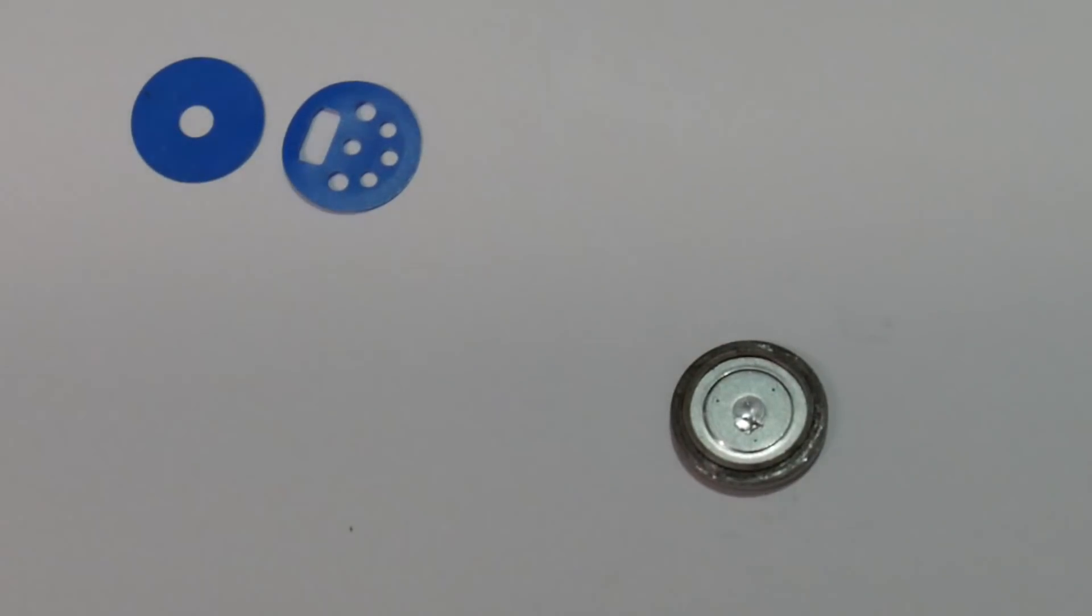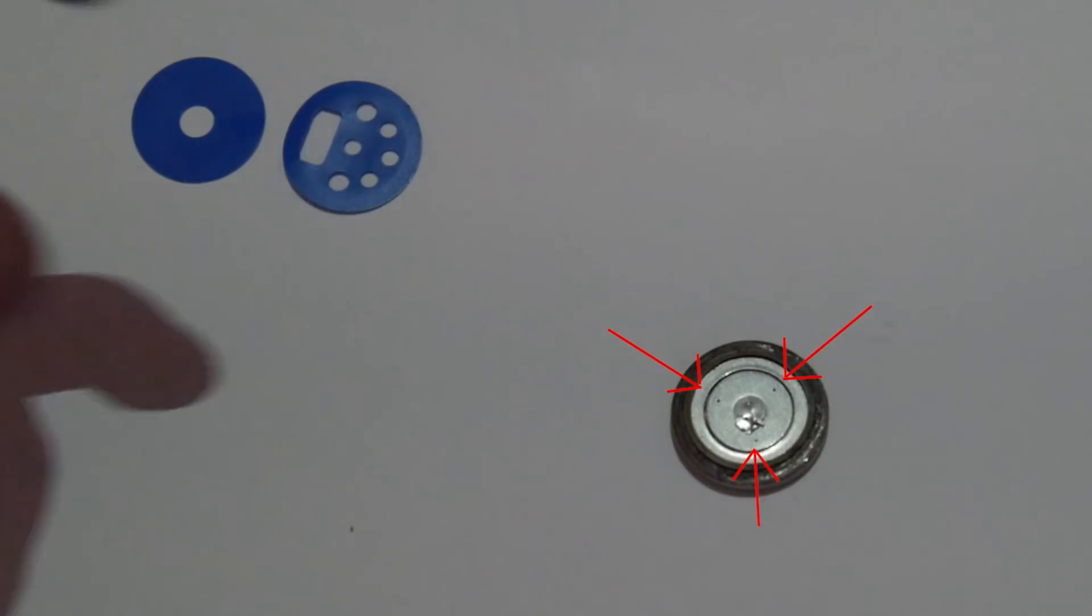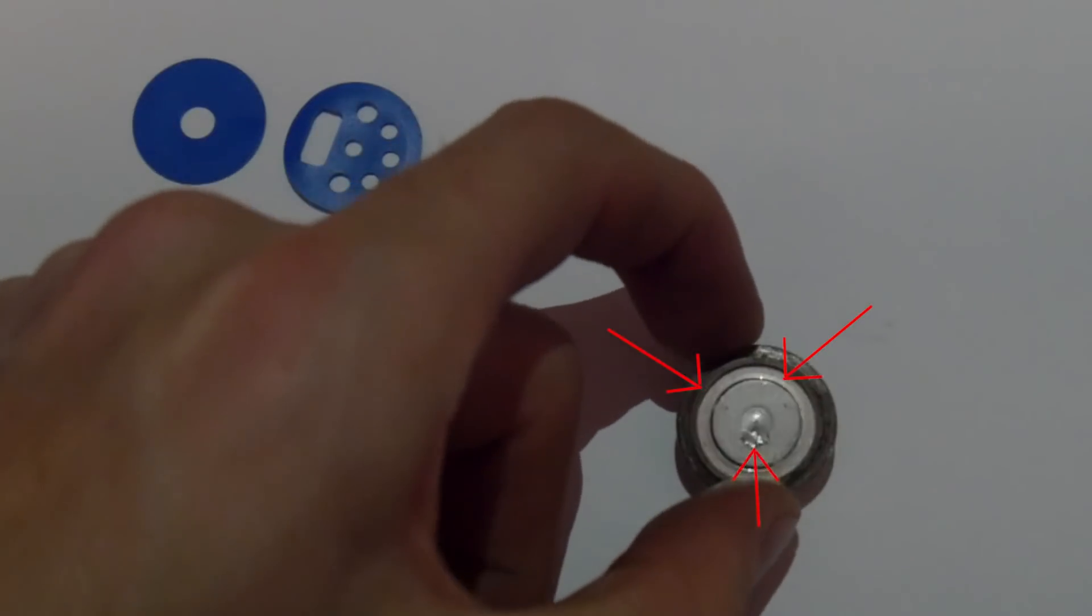Now, in case the cell does heat up, Tesla added some cool little vent holes in the top of the cell, which help vent off gases. Now these holes are about half a millimeter wide, which is incredibly impressive from a manufacturing standpoint.